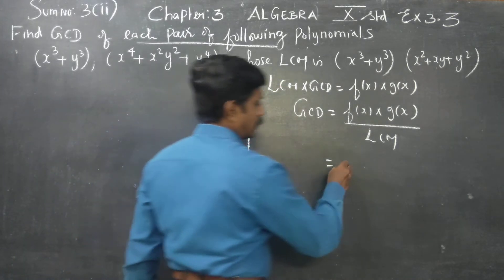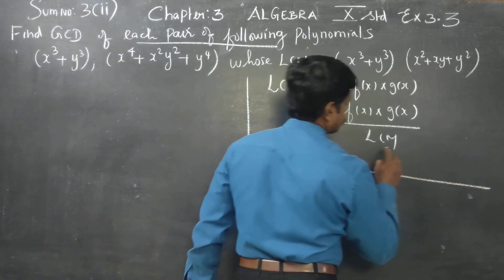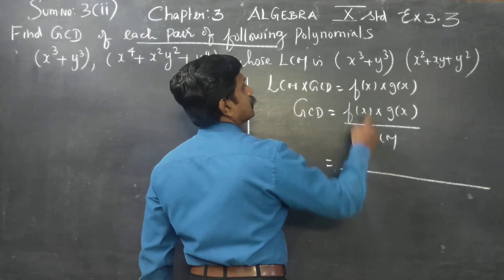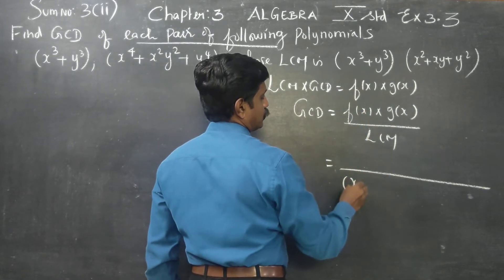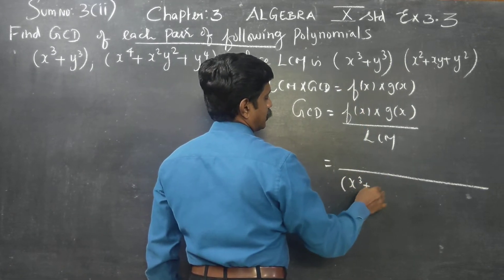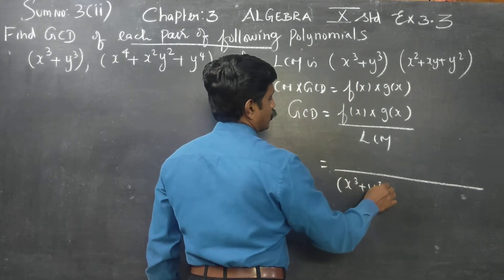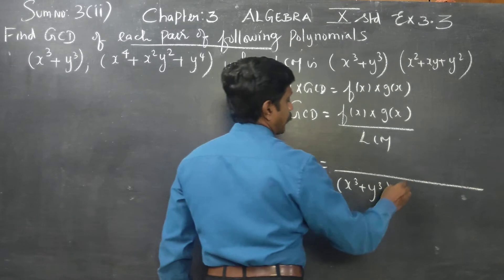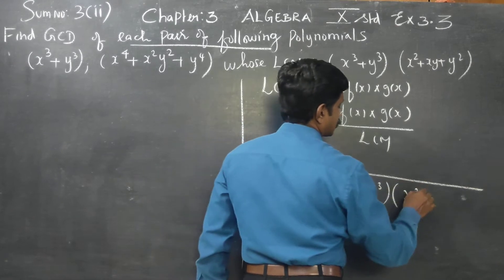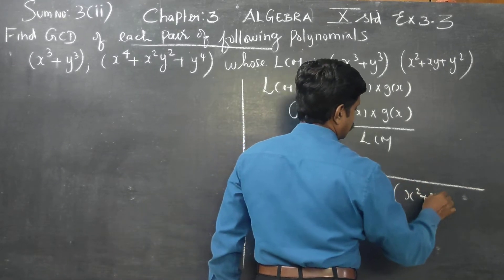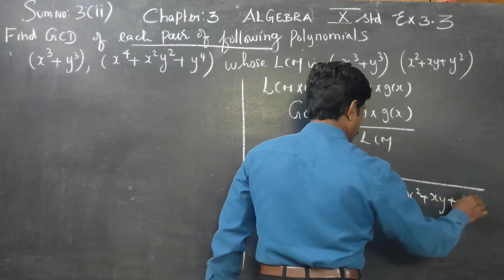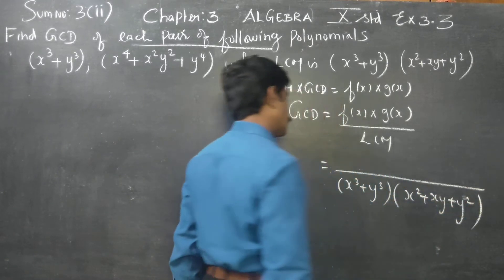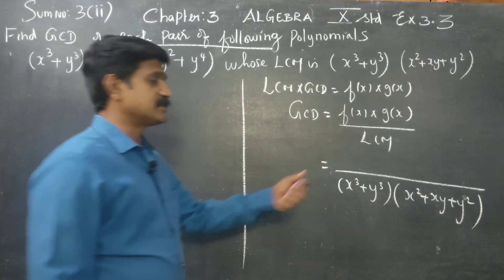What is my LCM? The LCM is x cube plus y cube, multiplied by x square plus xy plus y square.